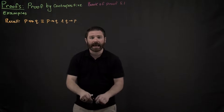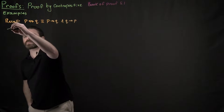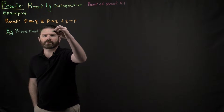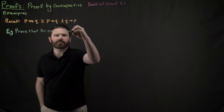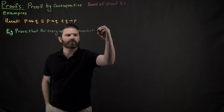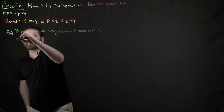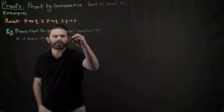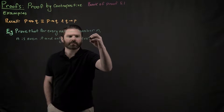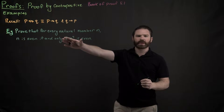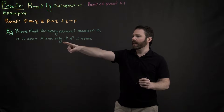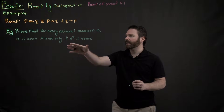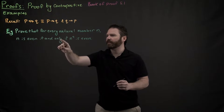Let's consider this example: prove that for every natural number n, n is even if and only if n squared is even. I can see that this is a biconditional statement because there is an if and only if.